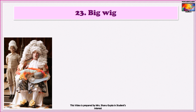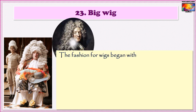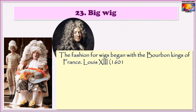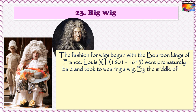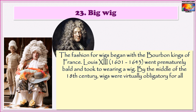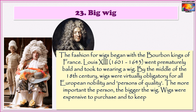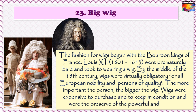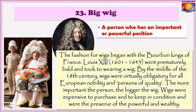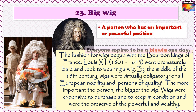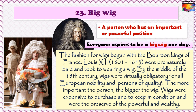The 23rd idiom is Big Wig. In the seventeenth and eighteenth centuries, wearing wigs was a fashion in Europe. Kings in France and England wore these and they were compulsory for all European nobility and persons of quality. The more important the person, the bigger the wig. Wigs were expensive to purchase and keep in condition and were the preserve of the powerful and wealthy. So a big wig is a person who has an important or powerful position. For instance, everyone aspires to be a big wig one day.